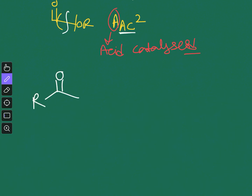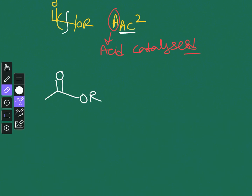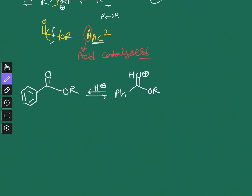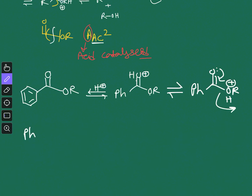For the second acid-catalyzed mechanism, consider an ester where the R group is an aromatic ring, such as a phenyl group. Upon protonation of the carbonyl, proton exchange can occur between the two oxygens to give a carbonyl with an ORH⁺ leaving group. The oxygen lone pair then pushes, generating an acylium cation (Ph–C≡O⁺) and releasing the alcohol.